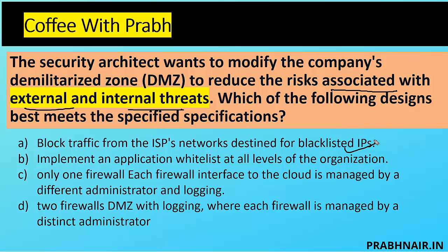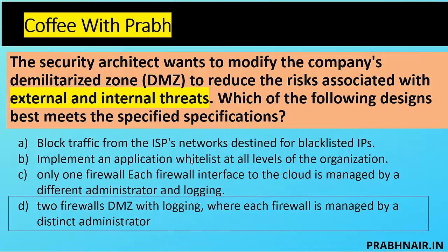Option B: implement application whitelist at all levels — that is internal to the organization only. Option C: one firewall with each interface managed by a different administrator — that is more from a tracking point of view. Option D: two firewall DMZ with logging where each firewall is managed by a distinct administrator. This controls single point of failure and tracks both external and internal traffic. If one firewall is down, the other manages it. Each firewall must be managed by a distinct administrator, otherwise it could lead to fraud. So the answer is D.